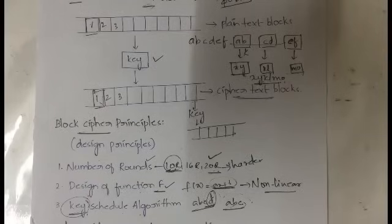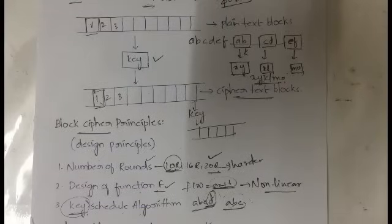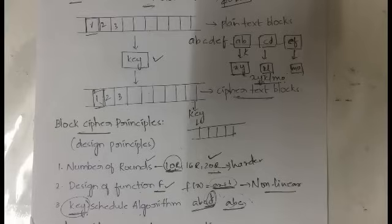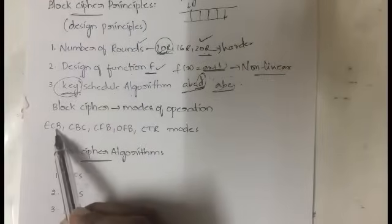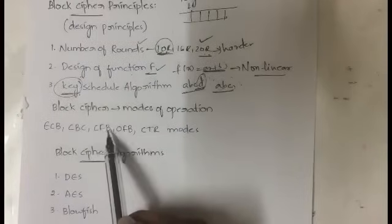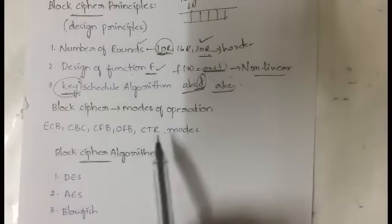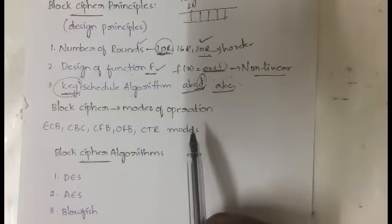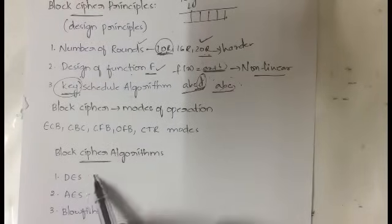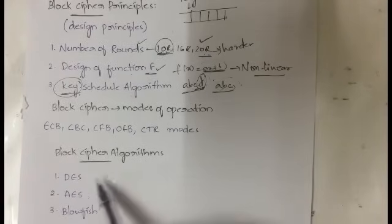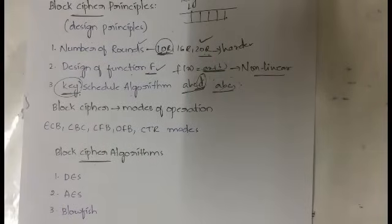Next, we will learn about the modes of operation of block cipher and the block cipher algorithms. I'll give you the list here and explain each in detail in separate individual videos. The five modes of operation are: ECB (Electronic Code Book), CBC (Cipher Block Chaining), CFB (Cipher Feedback Mode), OFB (Output Feedback Mode), and Counter Mode. The block cipher algorithms are DES (Data Encryption Standard), AES (Advanced Encryption Standard), and Blowfish. I will make individual detailed videos for each of these algorithms.